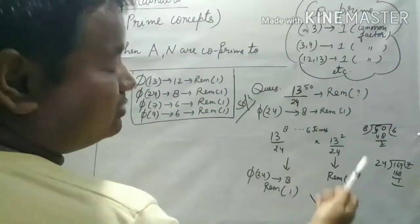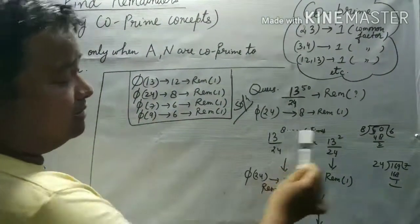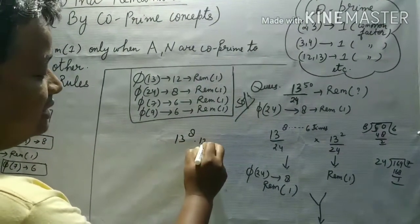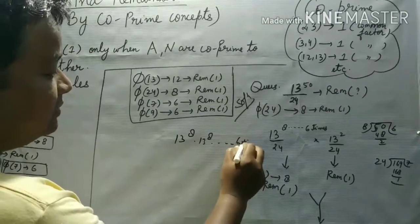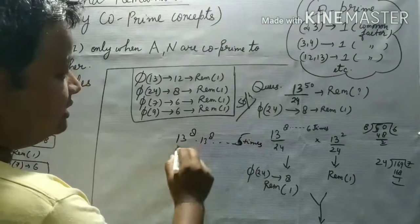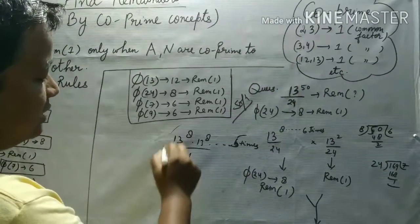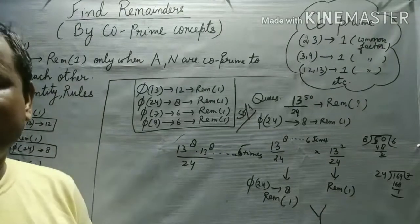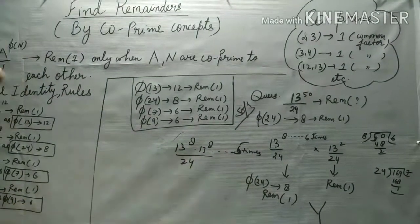So remember 1. Now this is just one. Actually there is 13 power 8, and then 13 power 8, now we will divide it. And then what is it? 24. Now we will divide it, the same thing. It is just one thing, and then we will divide it.